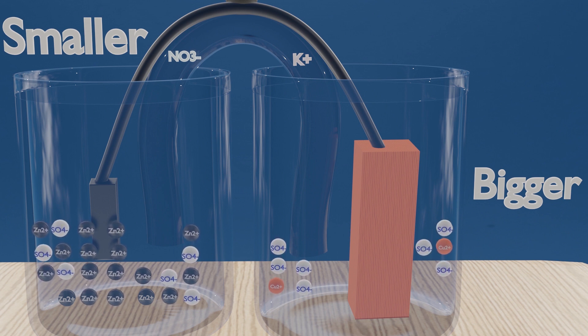Fortunately, we do have a salt bridge, which is usually a U-shaped glass tube filled with an electrolyte. This electrolyte can be constructed from several components, but it is always composed of positive and negative ions.